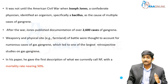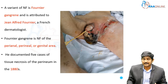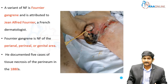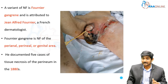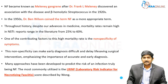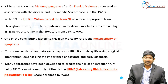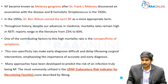A variant of necrotizing fasciitis is Fournier's gangrene, attributed to Jean Alfred Fournier, a French dermatologist. Fournier's gangrene is a form of necrotizing fasciitis of the perianal, perineal, and genital area. He documented the first five cases of necrotizing fasciitis of the perineum in the 18th century. Necrotizing fasciitis later became known as Melanie's gangrene after Dr. Frank L. Melanie, who discovered an association with beta-hemolytic streptococcus in 1920.